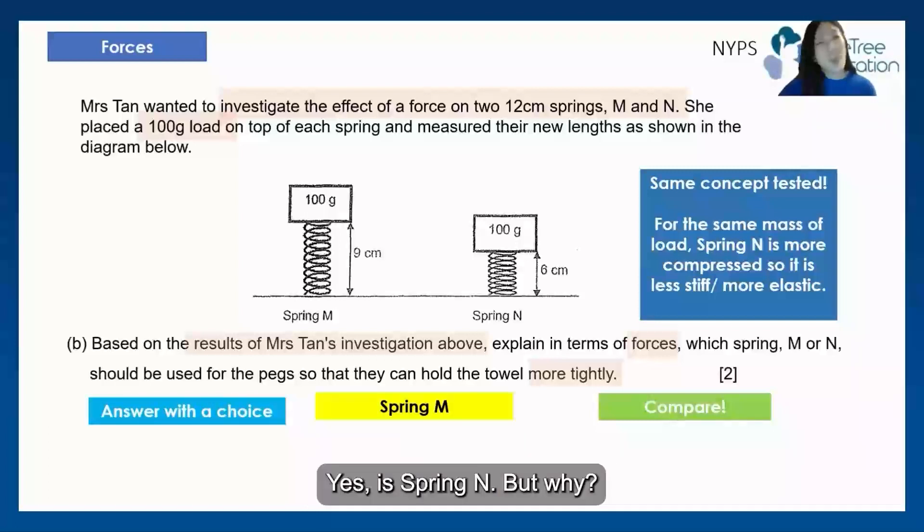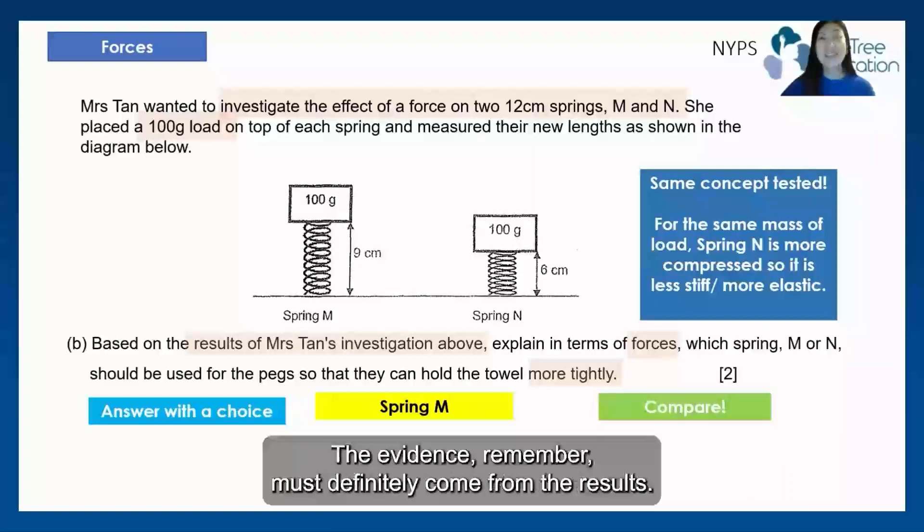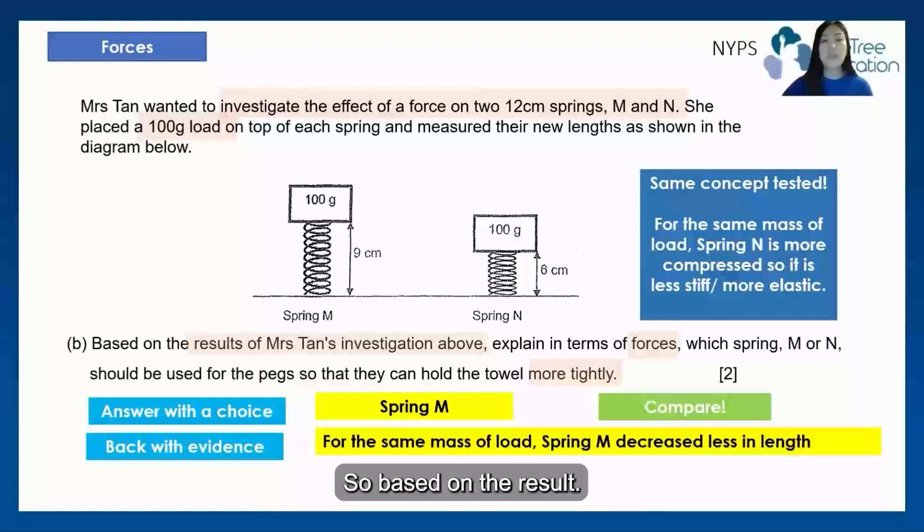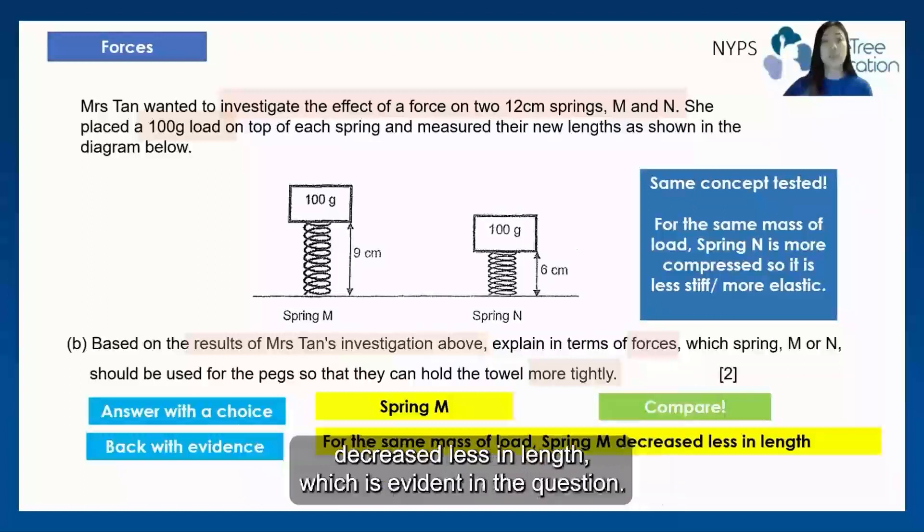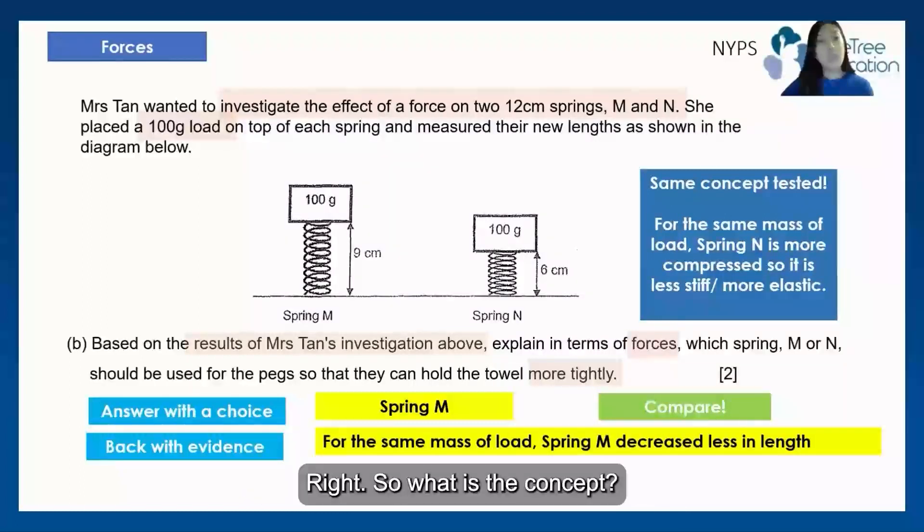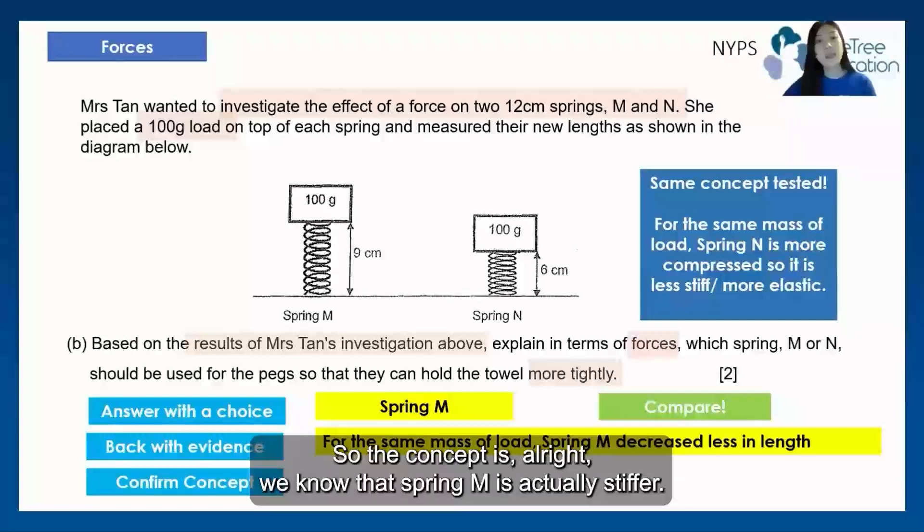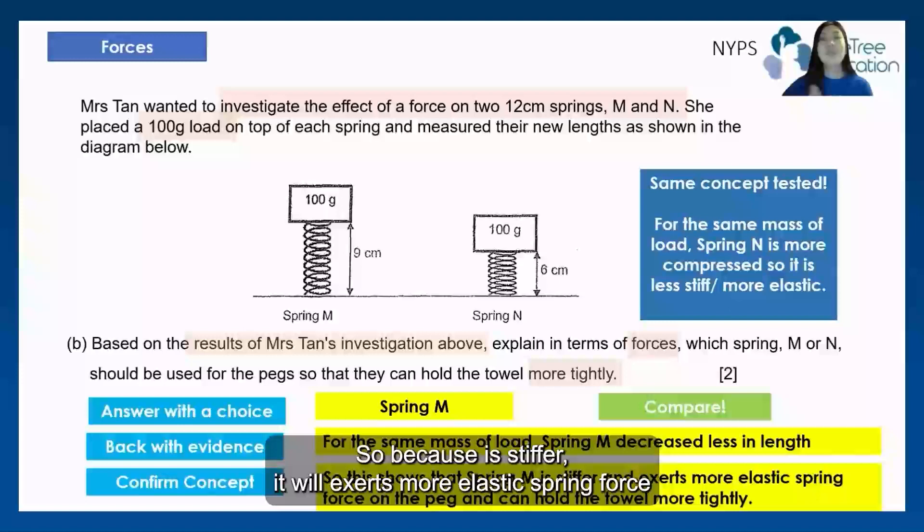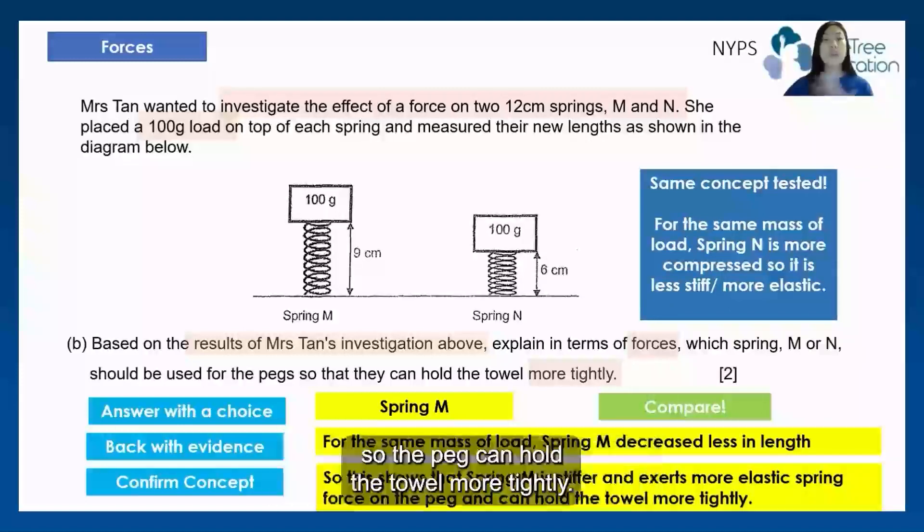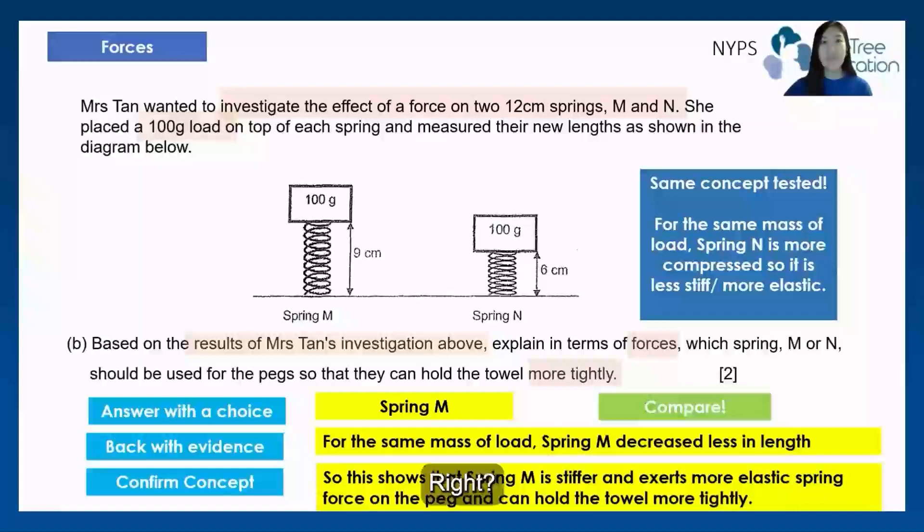So let's answer your choice. Yes, it's spring M. But why? Where is the evidence? The evidence, remember, must definitely come from the results. So based on the result, I can see that for the same mass of load, spring M actually decreased less in length, which is evident in the question. So what is the concept? So the concept is, we know that spring M is actually stiffer. So because it's stiffer, it will exert more elastic spring force, so the peg can hold the towel more tightly.